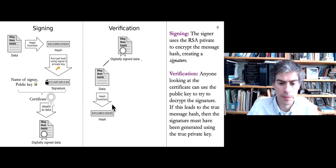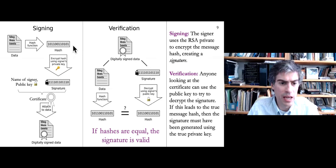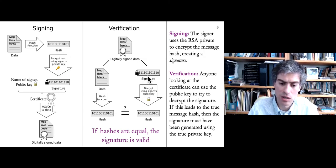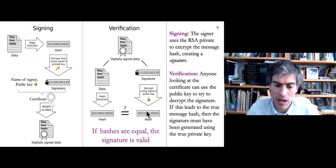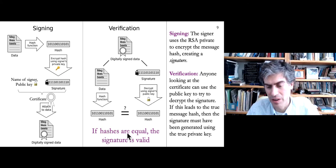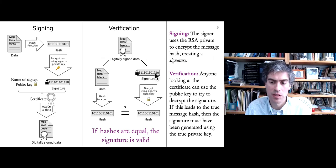Then they take the provided signature and decrypt it. The receiver cannot go in the forward direction — from hash to signature — because they don't have the private key. But given they already have a signature, they can go in reverse using the public key they do have. They decrypt the signature using the public key and get a hash. If that hash matches the hash of the document computed independently, then the signature is valid. If it isn't, it means the document was changed or the signature was not generated by Meg.